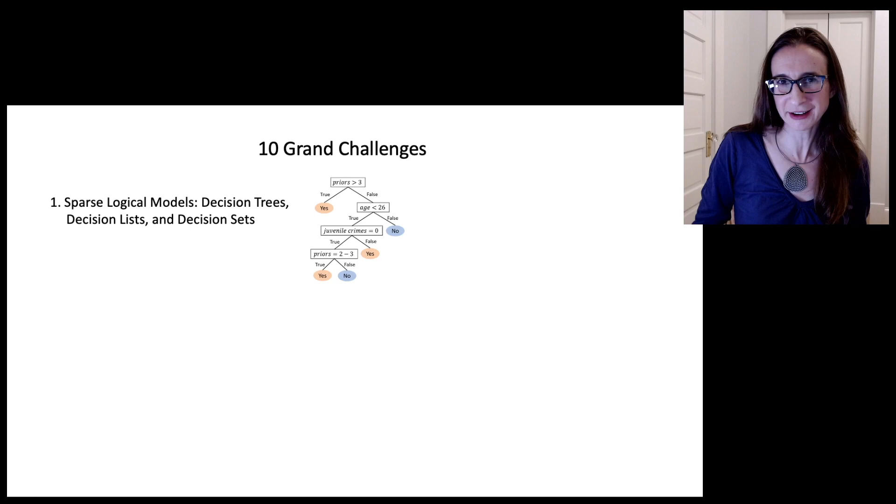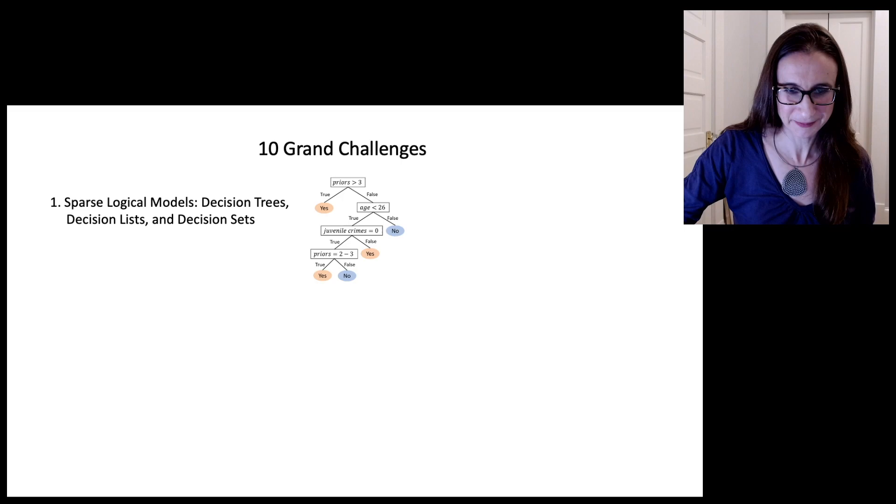The first one is sparse logical models, and we focus mainly on decision trees. So these are models that use if-then rules to make predictions.